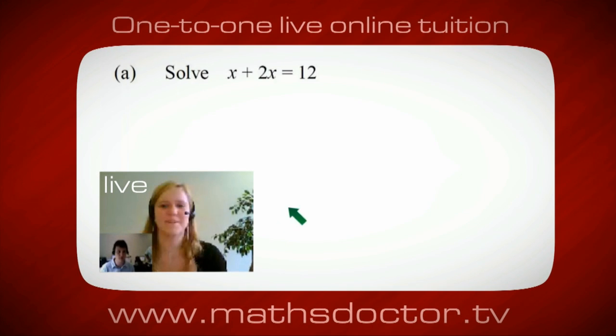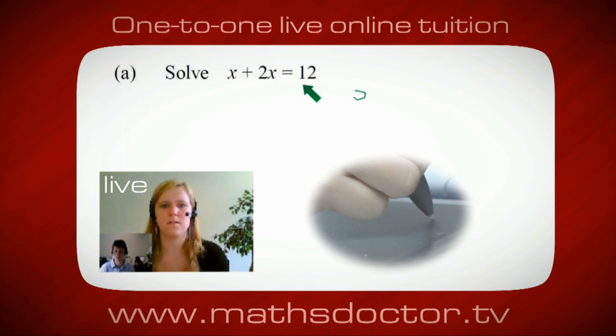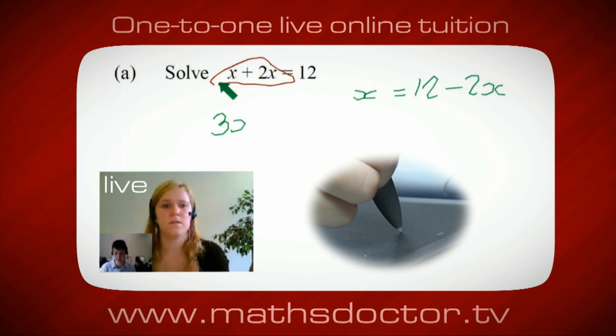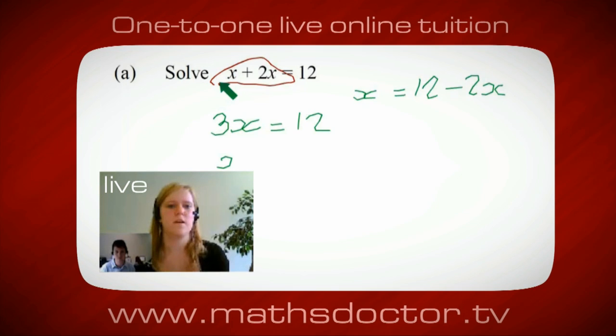OK, Mary, so let's have a look at this one. Solve x plus 2x equals 12. So what do you think you'd do first? OK, well, I want x on its own, so I would put x equals 12 minus 2x. OK, so a lot of the time we want to get x by itself, but what we want to do first is get all of these x's together. So can you see anything we can do with this? Get all these together in one place. OK, it's 3x, isn't it? Yeah, absolutely. So 3x equals 12. Oh, and so x equals 4. Brilliant. Spot on.